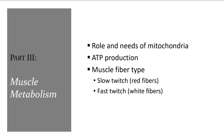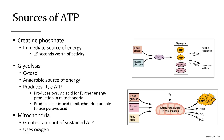Muscle metabolism is about the energy used in contracting a muscle. There are three sources of ATP: creatine phosphate — a rapid, immediate source but not usable for sustained exercise; glycolysis in the cytosol, which is anaerobic and doesn't produce much ATP on its own; and the mitochondria, where a lot more ATP is created. Glycolysis and the mitochondria must work together for maximal energy production during sustained activity.